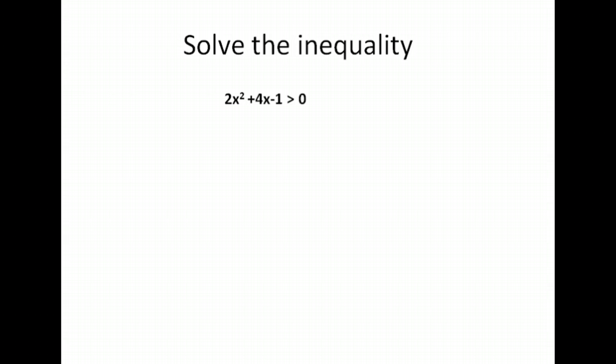Here we have yet another inequality — a different example with a different type of solution. Our first step is to get zero on one side and everything else on the other, which has already been done for us. Our next job is to find the zeros, so we take our function, set it equal to zero, and solve.